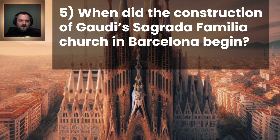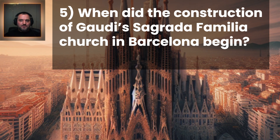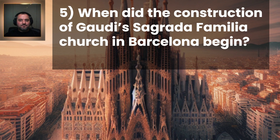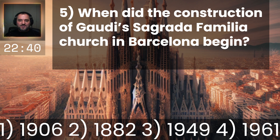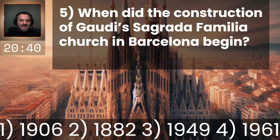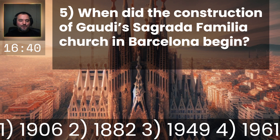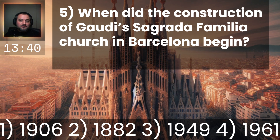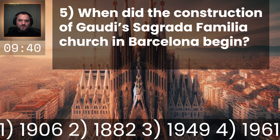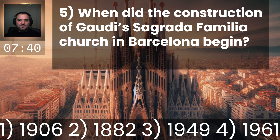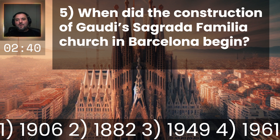Question number five: when did the construction of Gaudí's Sagrada Família church in Barcelona begin? Do you think it began in 1906, 1882, 1949, or 1961? Which of those years do you think is correct?